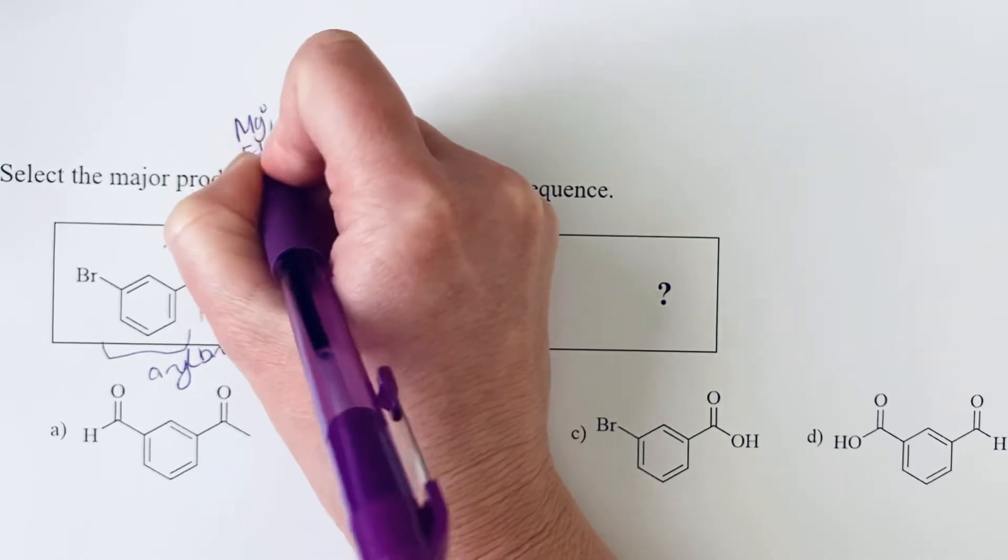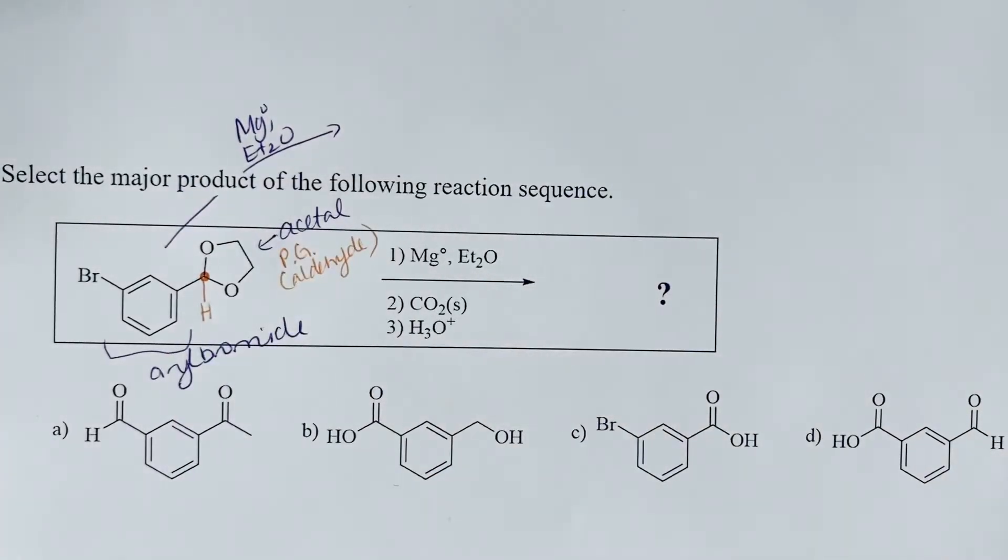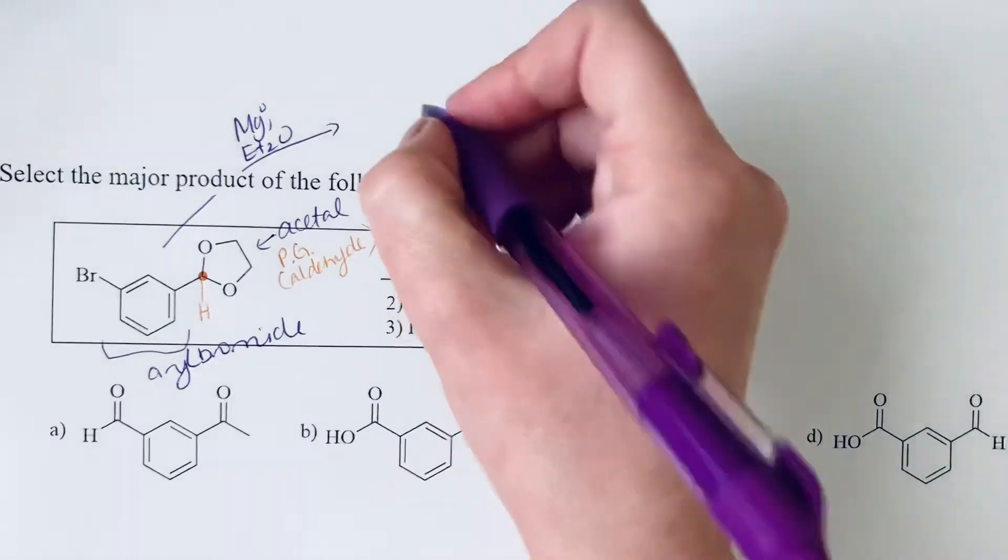And that answers our question about why we might want an aldehyde protected, because we know that aldehydes react with Grignard reagents. So if we don't want that to react, we would need to have it protected.